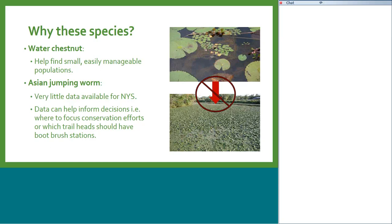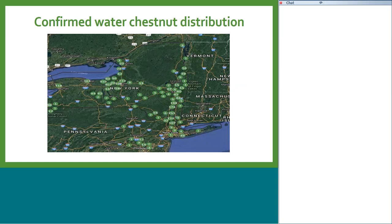In terms of Asian jumping worm, we don't have a lot of data in New York State either. It can really help inform decisions so PRISM leaders can figure out where to focus their conservation efforts or where to install boot brush stations at trailheads. So it's all data that we can use.